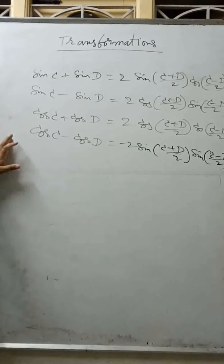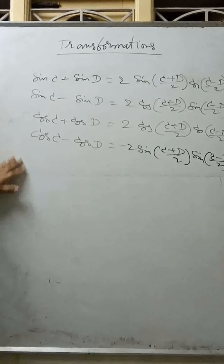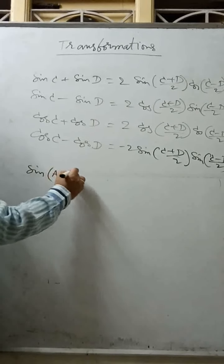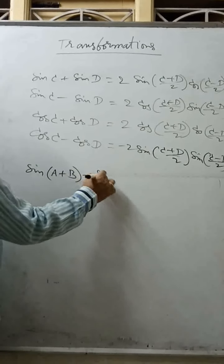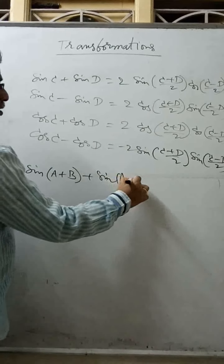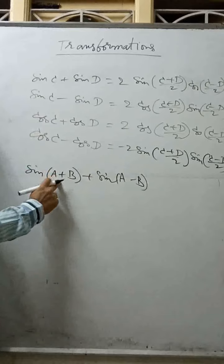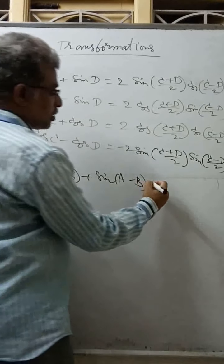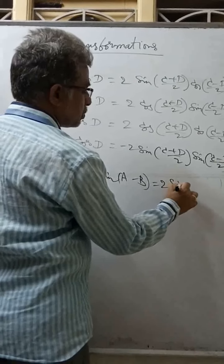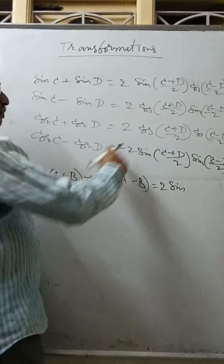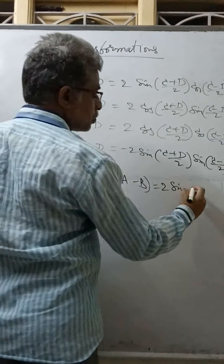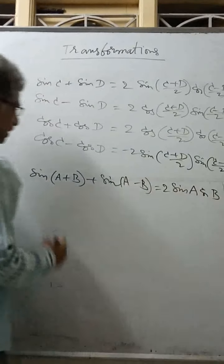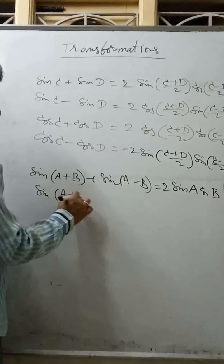All these transformation proofs were discussed in IP. Just writing the formulas now. Sine of A plus B plus sine of A minus B — in place of C writing A+B, in place of D writing A-B. Automatically this becomes 2 into sin((A+B+A-B)/2) = 2 sine A, and cos B. So sin(A+B) plus sin(A-B) equals 2 sin A cos B.